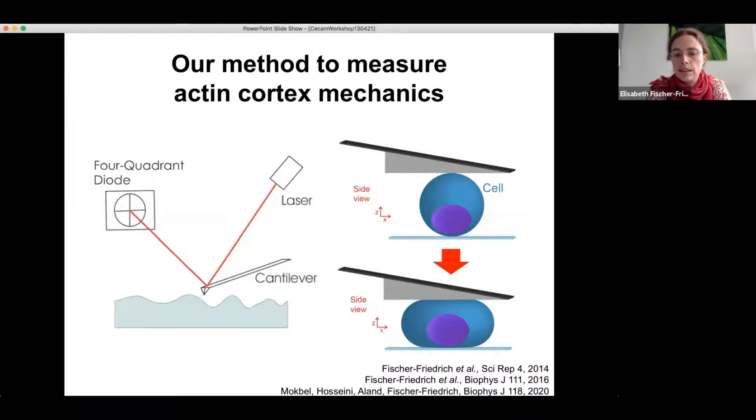Okay, so we use a particular setup to probe the mechanical properties of the actin cortex, and this is based on atomic force microscopy. Here you can see a conventional setup of an atomic force microscope with a force probe, with a so-called cantilever, which can be deflected by mechanical interaction with a surface underneath. So you can press it against the surface, the cantilever is deflected and the laser light which is being reflected on the tip is being reflected in a different way.